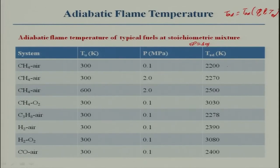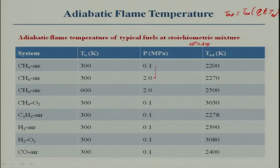If I increase the pressure to 2 MPa, the temperature is 2270 K — very little temperature difference. But if instead of 300 K initial temperature I double it to 600 K at the same pressure, you are getting 2500 K.